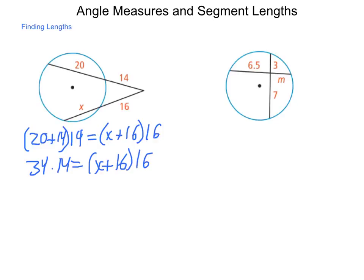So let's distribute that right-hand side and multiply the left at the same time. So we get 16X plus 256 is going to equal 34 times 14, which is 476. Now, subtracting the 256 with our subtraction property of equality, we have 220 is equal to 16X. Through division property of equality, we divide both sides by 16, and we come out with X being equal to 13 and 3 quarters.